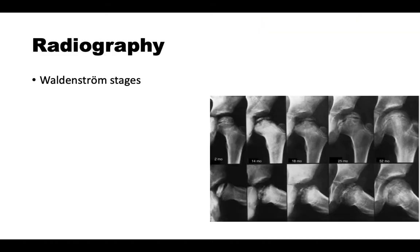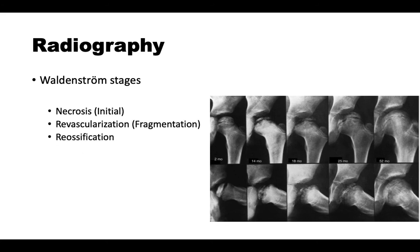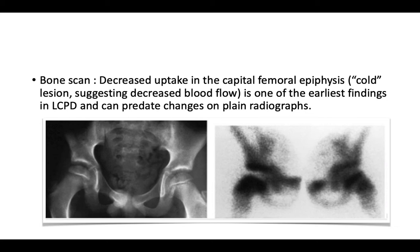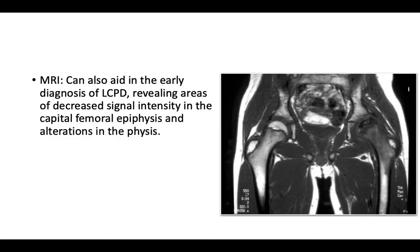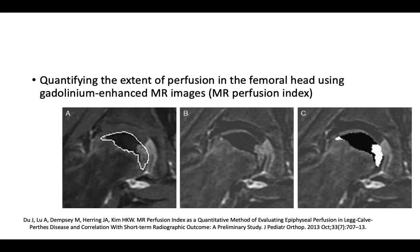Regarding radiology: the Waldenström stages for Perthes disease are necrosis (initial stage), fragmentation, re-ossification, and remodeling (healed stage). Bone scans show a cold lesion suggesting decreased blood flow. MRI in early cases reveals decreased signal intensity in the capital femoral epiphysis and alterations at the physeal site. MRI with gadolinium-enhanced perfusion studies by Harry Kim's group in Texas Scottish Rite showed a moderate correlation between early MRI scan appearance and late head deformity after healed Perthes disease.